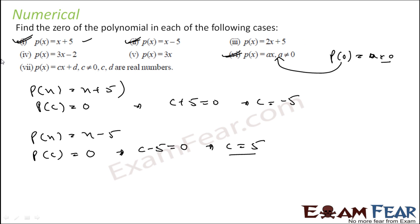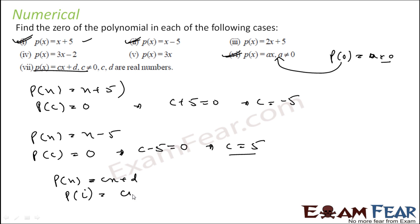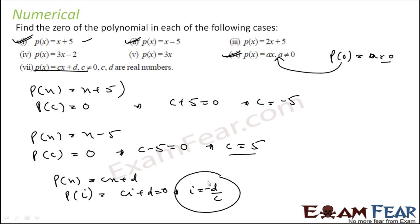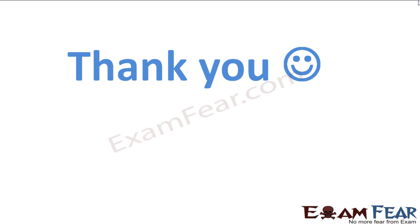Similarly you can do the rest. For p(x) = cx plus d, set p(i) = 0: c·i plus d equals 0, so i equals minus d by c. Therefore, minus d by c is the zero of this polynomial.